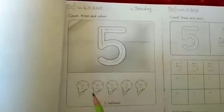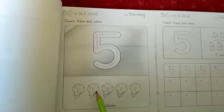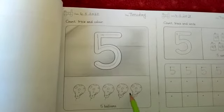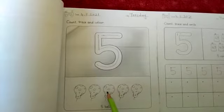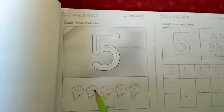And count how many balloons are here? 1, 2, 3, 4, 5. 5 balloons are here. 1, 2, 3, 4, 5, number 5.